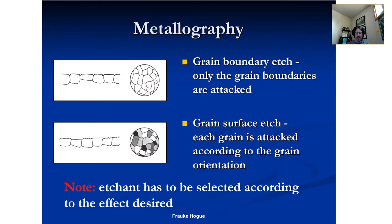Frauk Hoag summarizes etching nicely here. Grain boundary etching means only the grain boundaries are attacked by your etchant, so they behave differently than the bulk. Grain surface etching means each grain is attacked according to its orientation — you see a difference in color because they have a different associated surface energy. An etchant has to be selected according to the effect desired. In metallography handbooks there are tips indicating which etchant is good for grain contrast versus grain boundary analysis, so always consult your reference.